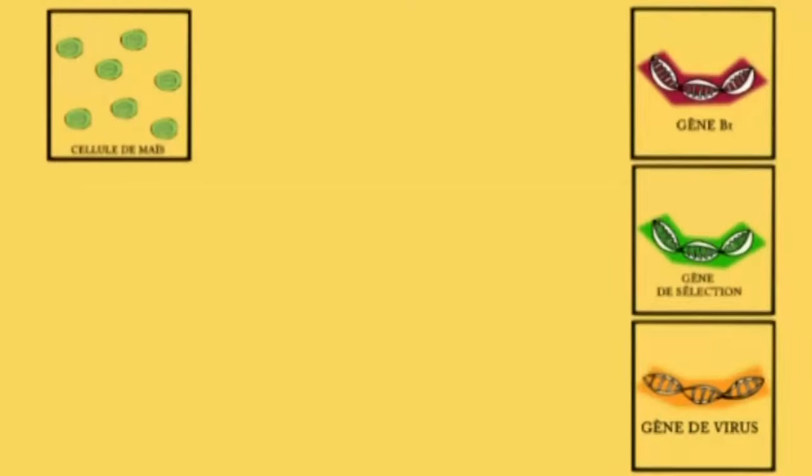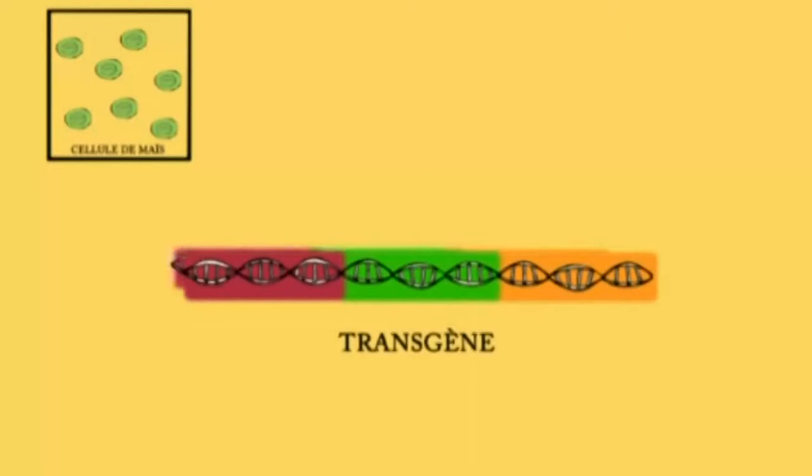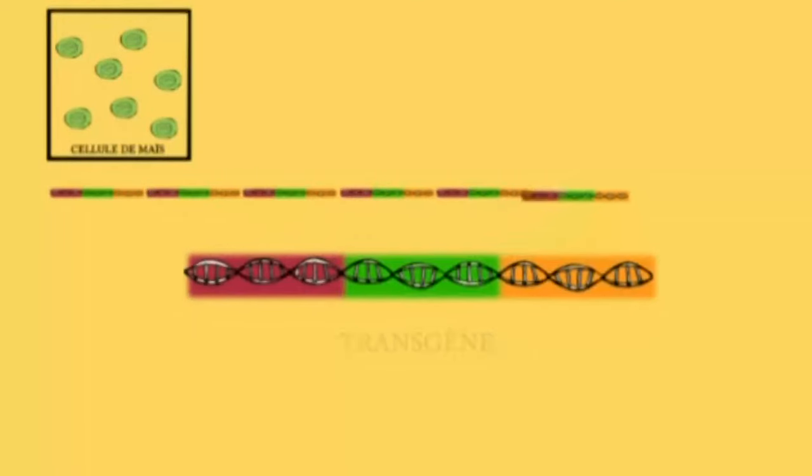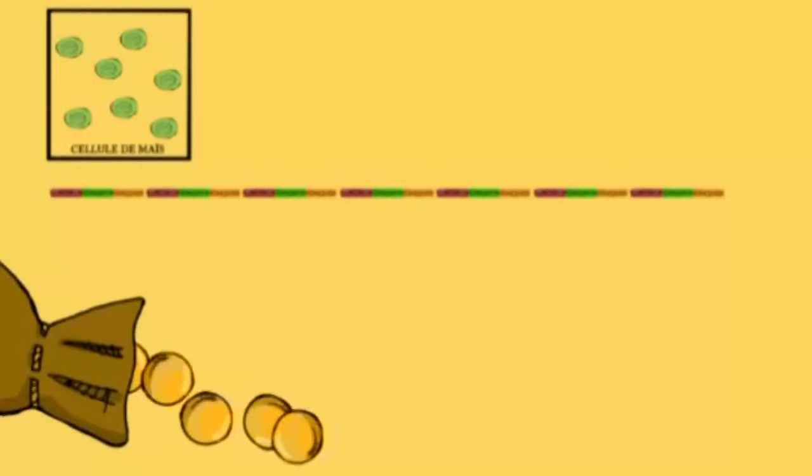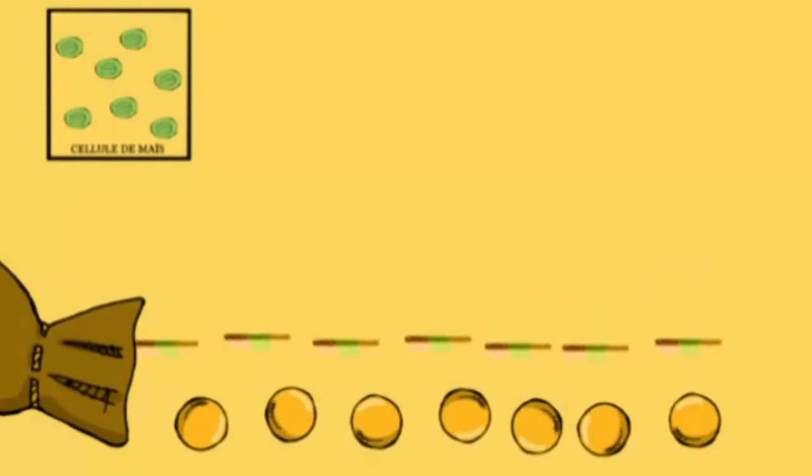On colle ces trois gènes, on dépose un brevet sur le transgène et on le multiplie. Alors maintenant, il faut envoyer ces transgènes dans les cellules de maïs. Pour cela, on prend des petites billes et on colle les transgènes dessus.